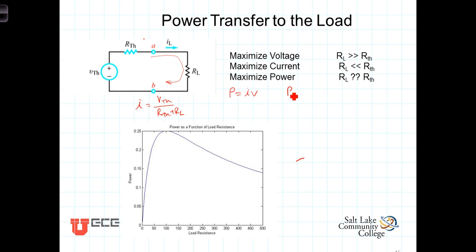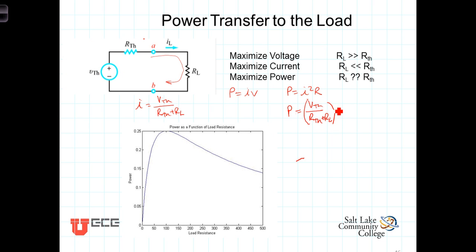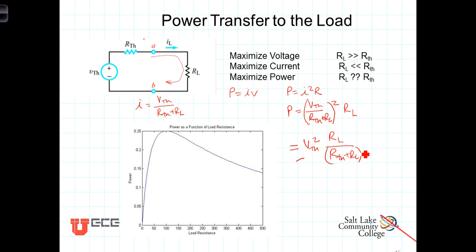We know that in a resistor, power is equal to I squared times R. So let's take this current expression and plug it into our power formula. When we do, we get that power delivered to the load is equal to I squared — where I is V_Thevenin over (R_Thevenin plus R_L) — times R_L. Bringing the V_Thevenin squared term out in front since it's a constant, we get: P = V_Thevenin² × R_L / (R_Thevenin + R_L)².